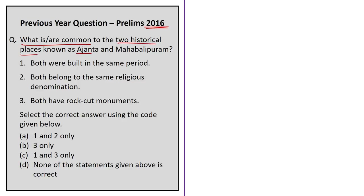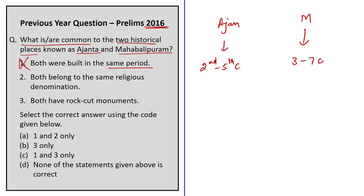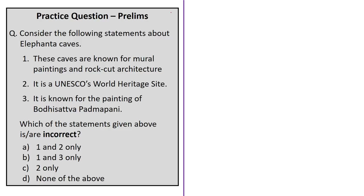A 2016 prelims question asked what is common to Ajanta and Mahabalipuram. Statement one — both were built in the same period — is wrong: Ajanta was built in the 2nd to 5th century, Mahabalipuram from the 3rd to 7th century. Statement two — both belong to the same religious denomination — is wrong: Ajanta is Buddhist and Mahabalipuram is Hindu. Statement three — both have rock-cut monuments — is correct. The answer is option B, three only.